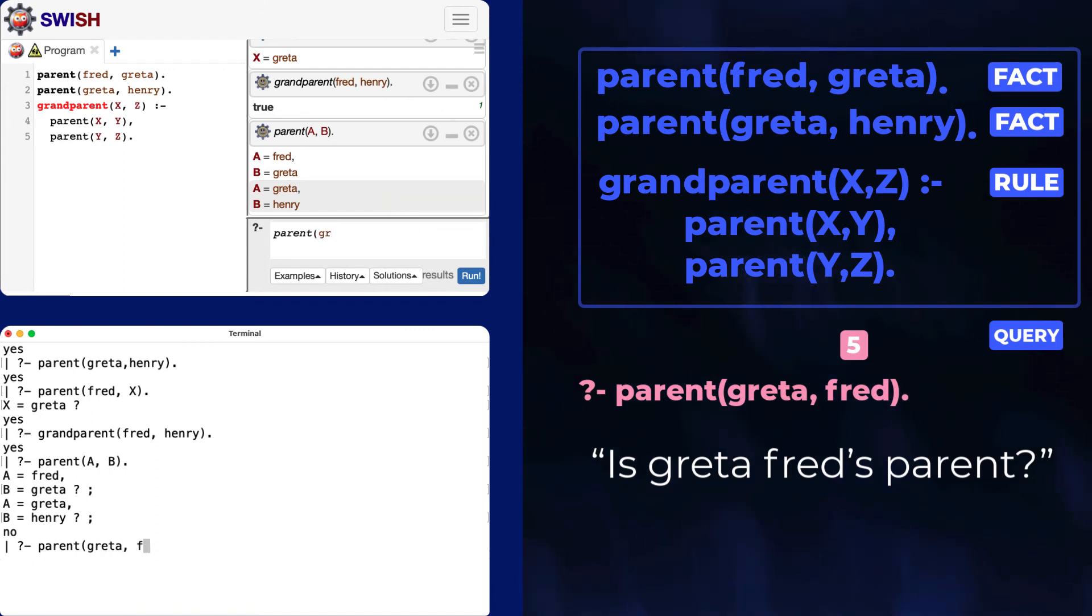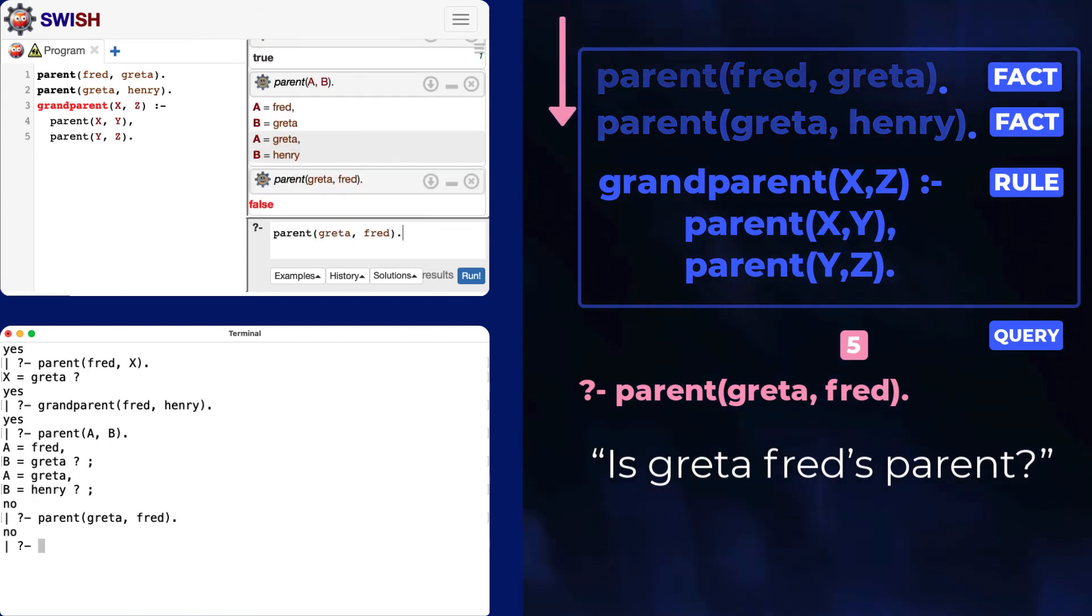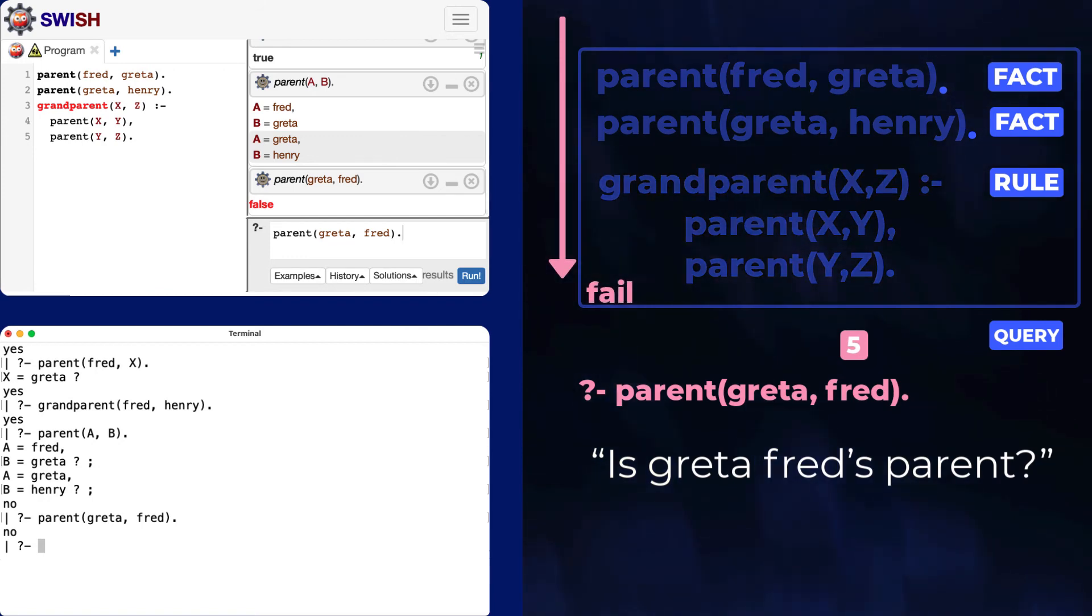Prologue is based on techniques from mathematical theorem proving. It doesn't understand the meanings of the words in the program. In query five, the order of arguments is the reverse of the program. Prologue doesn't say, wait, it's the other way around. It just fails.